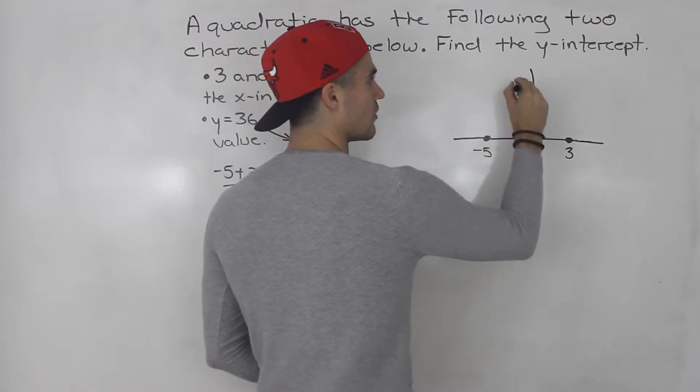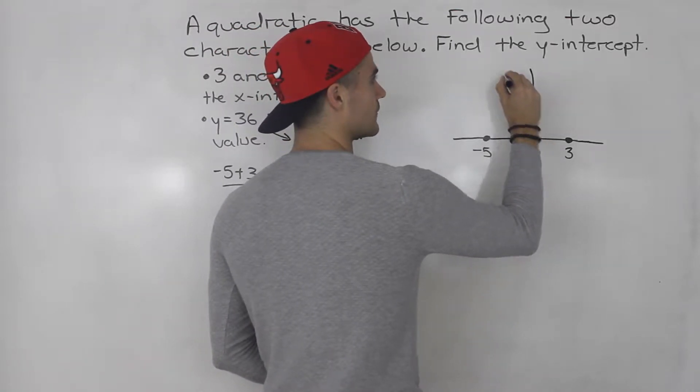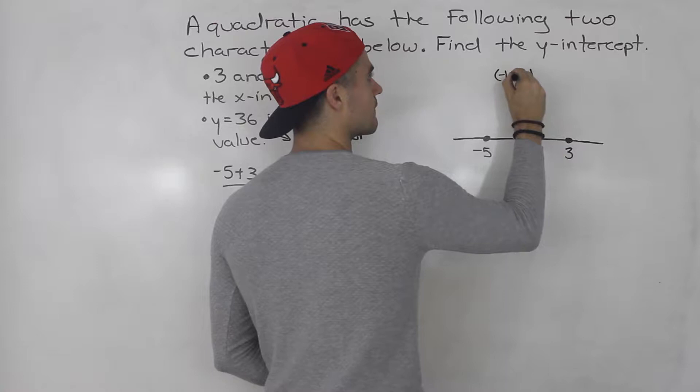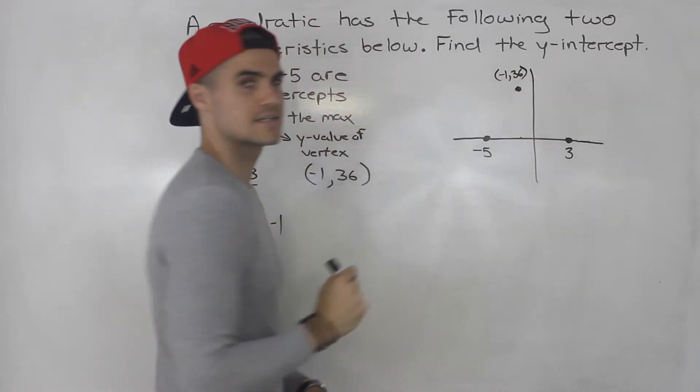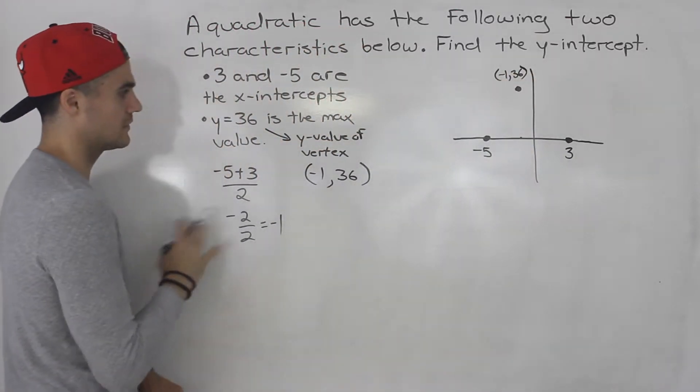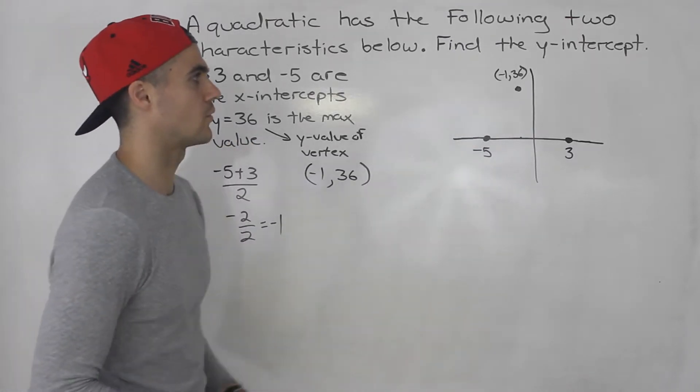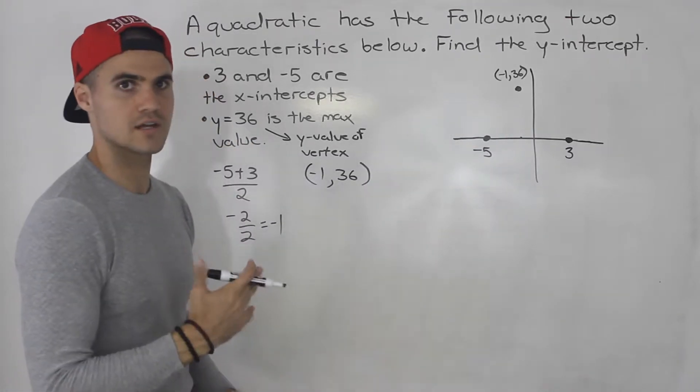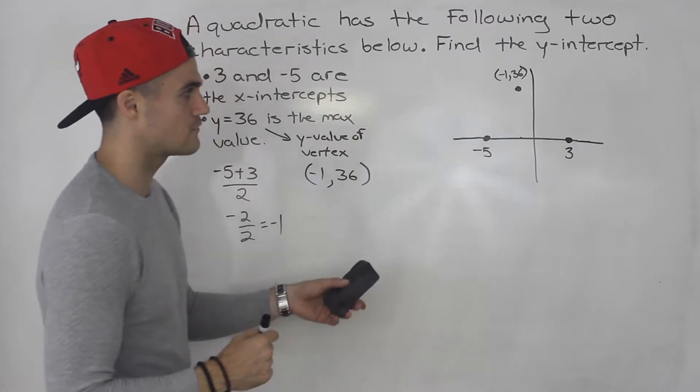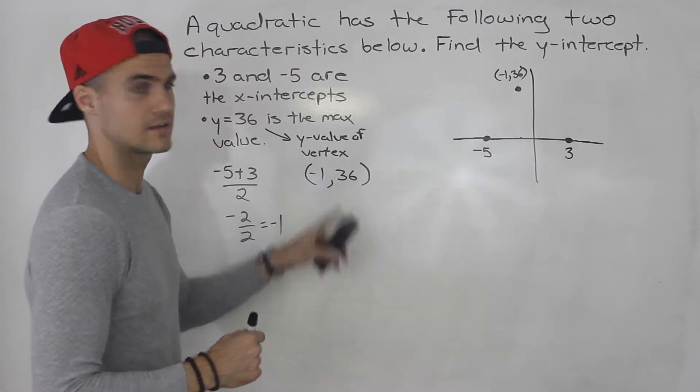So, that negative 1, 36, that's like up here. Alright, does that make sense? So, we had to do a little bit of extra work here with this information to get that coordinate there, to know where the vertex is actually happening. We had the y-value, we have to find the x-value.